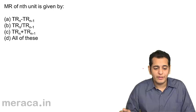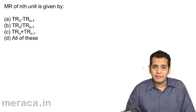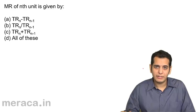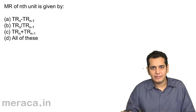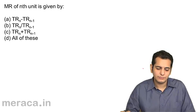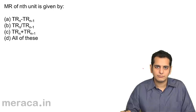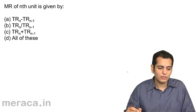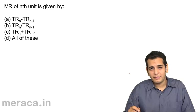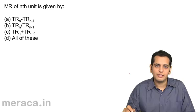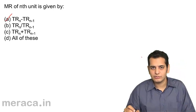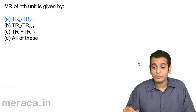Next, MR of nth unit is given by: A, TR at n minus TR at n minus 1; B, TR at n divided by TR at n minus 1; C, TR at n plus TR at n minus 1; and D, all of these. Yes, we have already done this concept where marginal revenue of a product is the total revenue at nth unit minus the total revenue at n minus 1 unit. So the answer is A in this case. Let us check. Yes, correct.